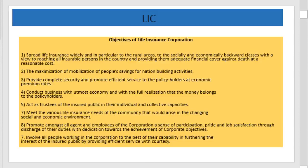The objectives of Life Insurance Corporation of India are: first, spread life insurance widely and in particular to the rural area; second, maximization of mobilization of people's savings for nation-building activity; third, provide complete security and promote efficient services to the policyholders; fourth, conduct business with utmost economy and with full realization; fifth, act as trustee of the insured public in individual and collective capacity; sixth, meet the various life insurance needs of the community; and seventh, promote amongst all agents and employees of the corporation a sense of participation, involving all people working in the corporation to the best of their capability in furthering the interest of the public.